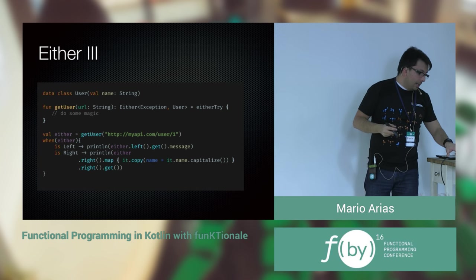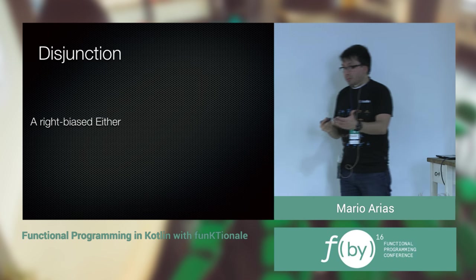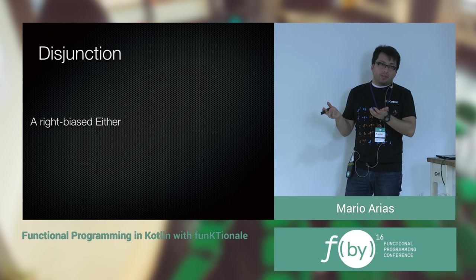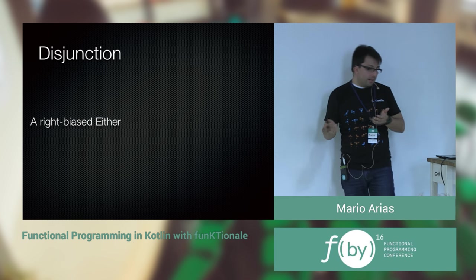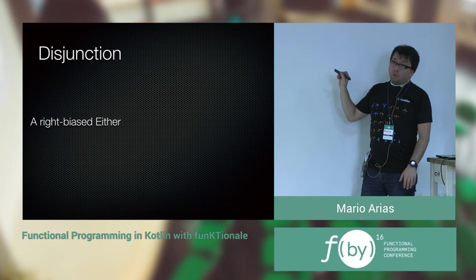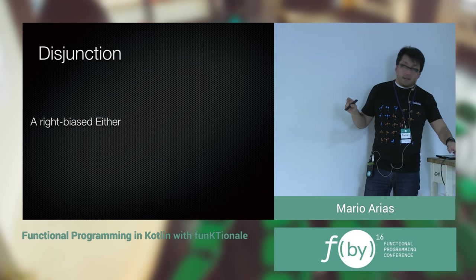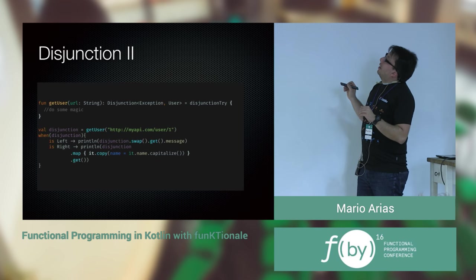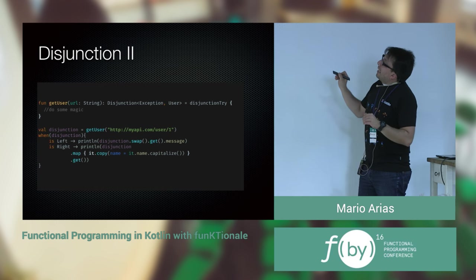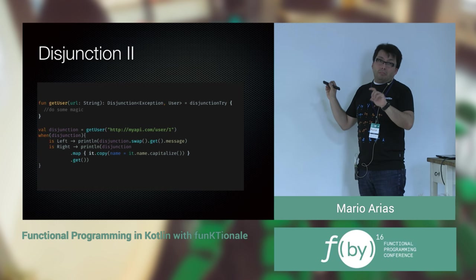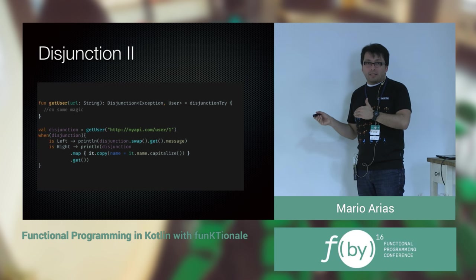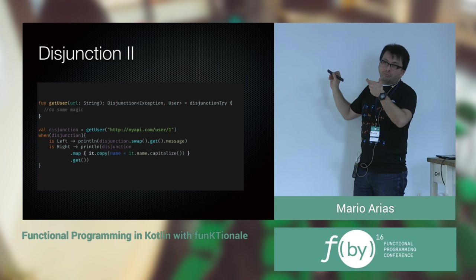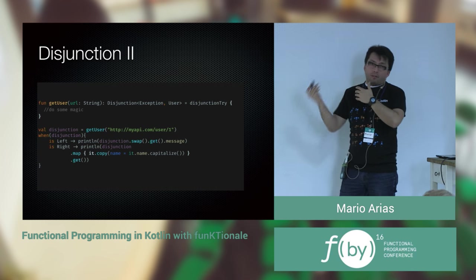There's also a function called `eitherTry` — you call anything you want, and if it throws an exception, it returns a Left of the exception, or wraps your value in a Right. But you still have the projection problem with `.left` and `.right`. Disjunctions are like Either but right-biased, so you don't need projections. That's how Scala 2.12 and Scalaz define their Either types. Since it's right-biased, I know it's right — unless it's left, in which case I call `swap` to switch it.